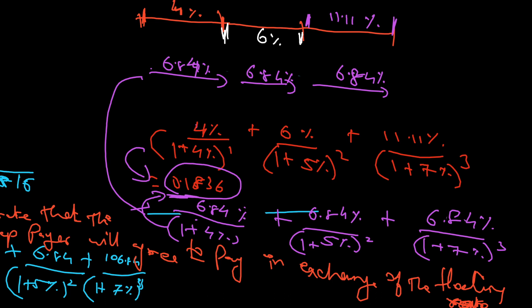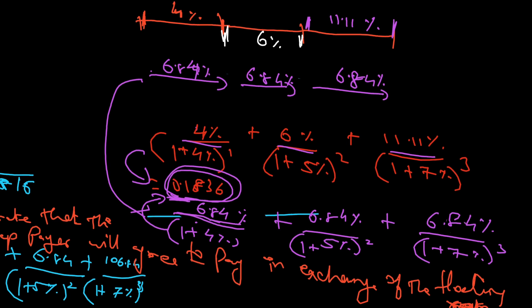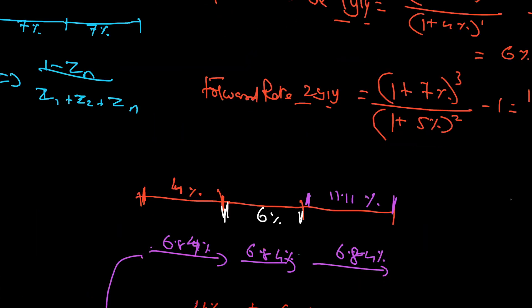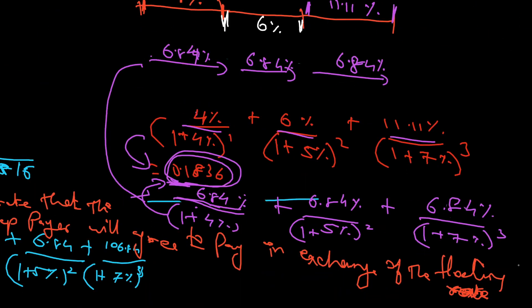Since both sides — paying 6.84% three times, or receiving four percent, six percent, and 11.11% — lead to the same present value, the valuation is zero. That's why the valuation of a swap contract at initiation is zero. After this, when the floating rate or forward rate changes, profit and loss will be calculated accordingly. But at the initial stage, the valuation of the swap agreement is zero. Thank you.